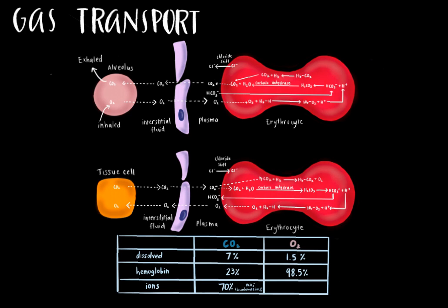Oxygen transport is more straightforward. Oxygen diffuses from the alveoli through the pulmonary capillary wall and into red blood cells, where it becomes bound to hemoglobin — which is now free of carbon dioxide and H-plus ions. Hemoglobin bound with oxygen is referred to as oxyhemoglobin.